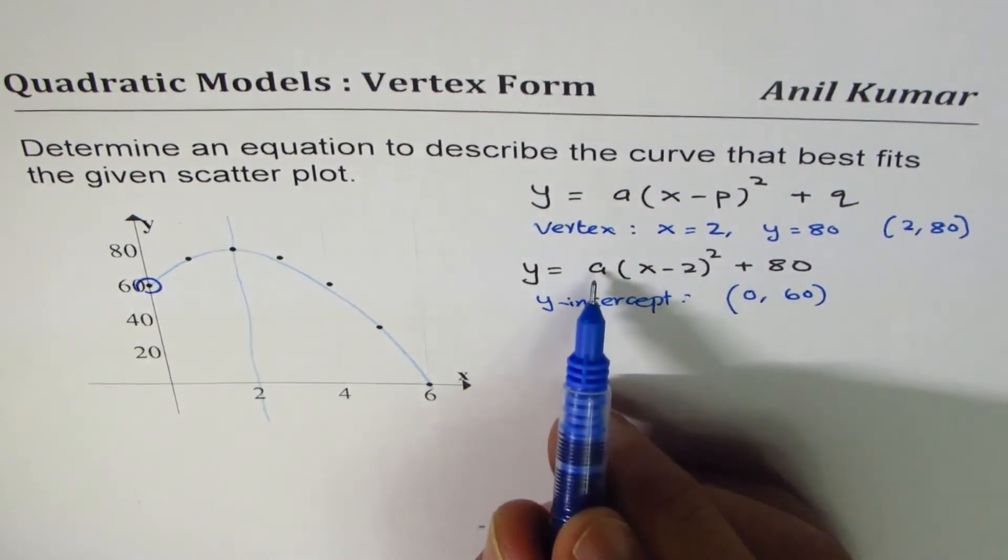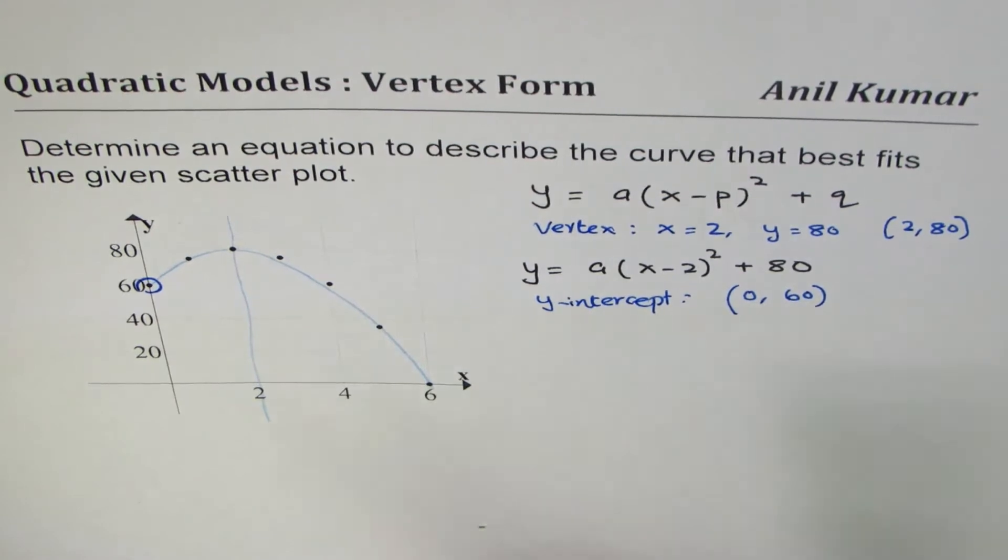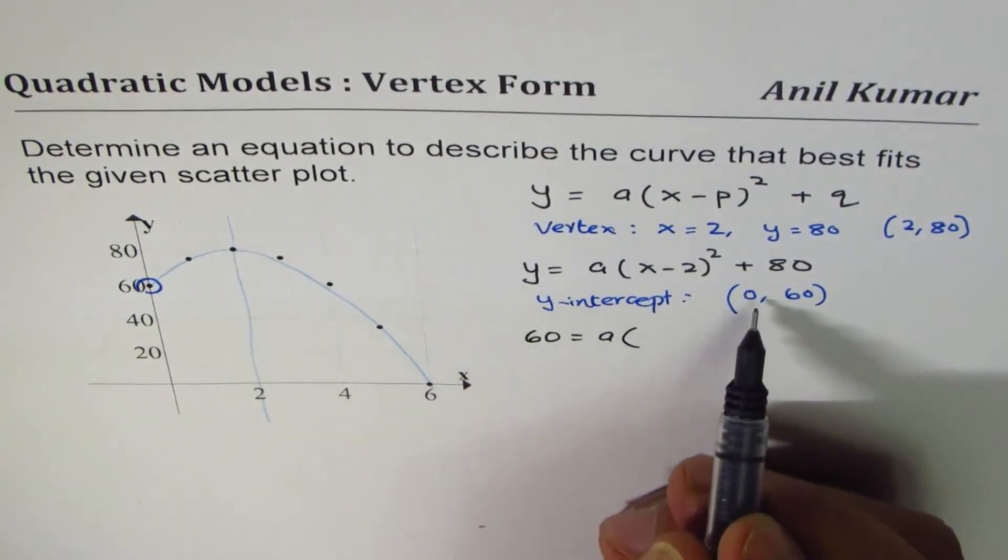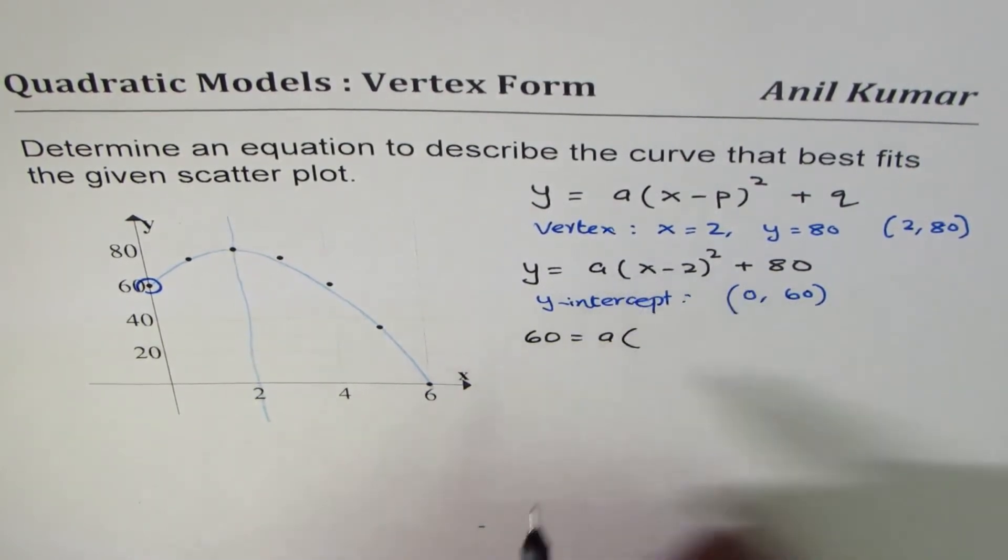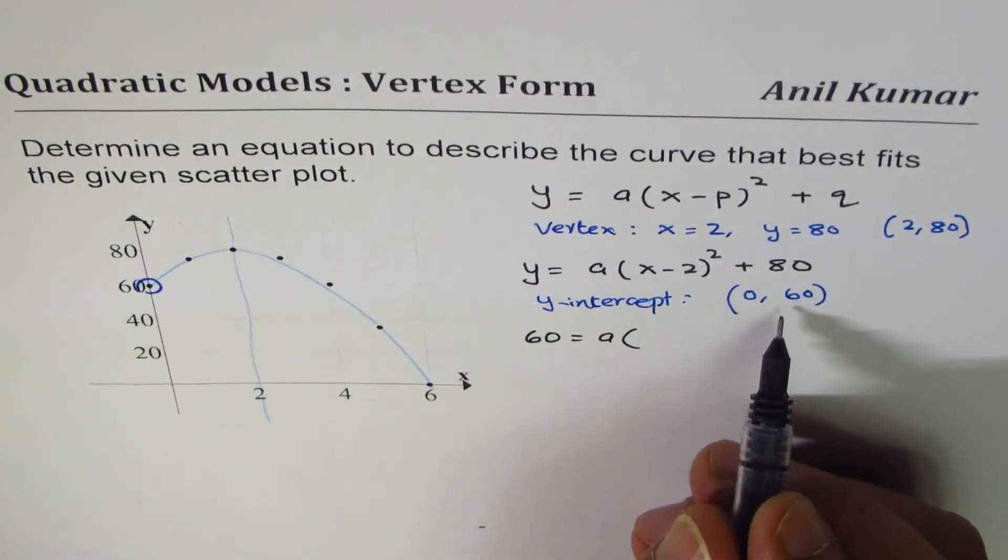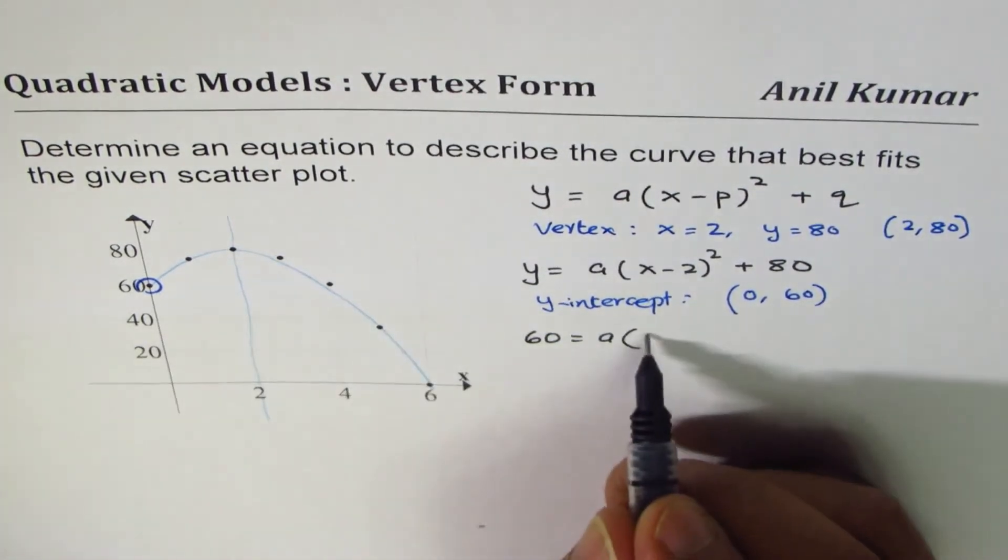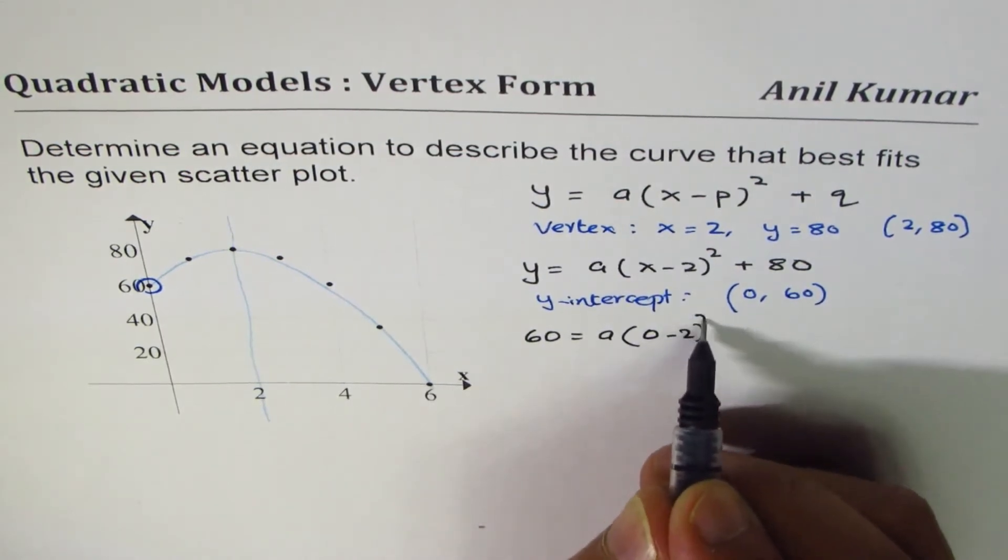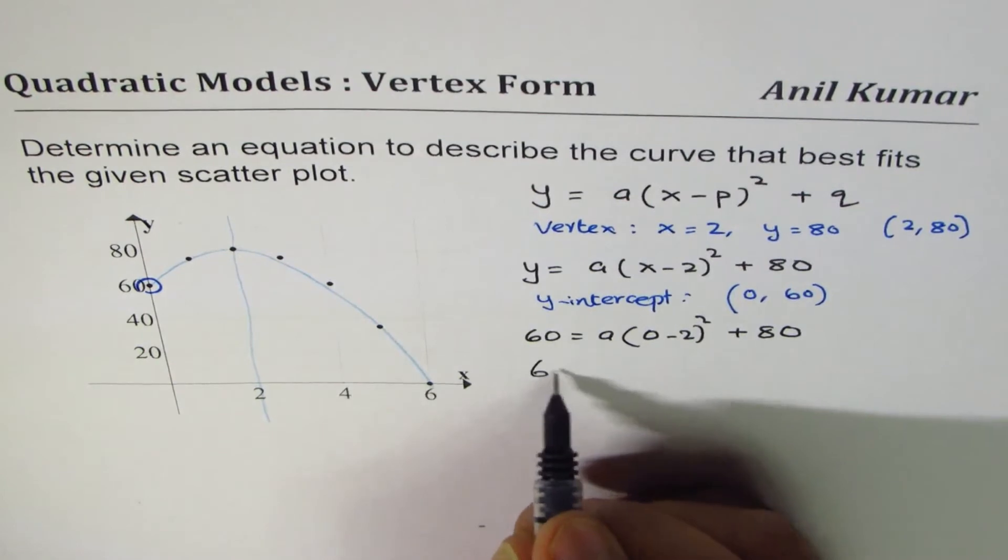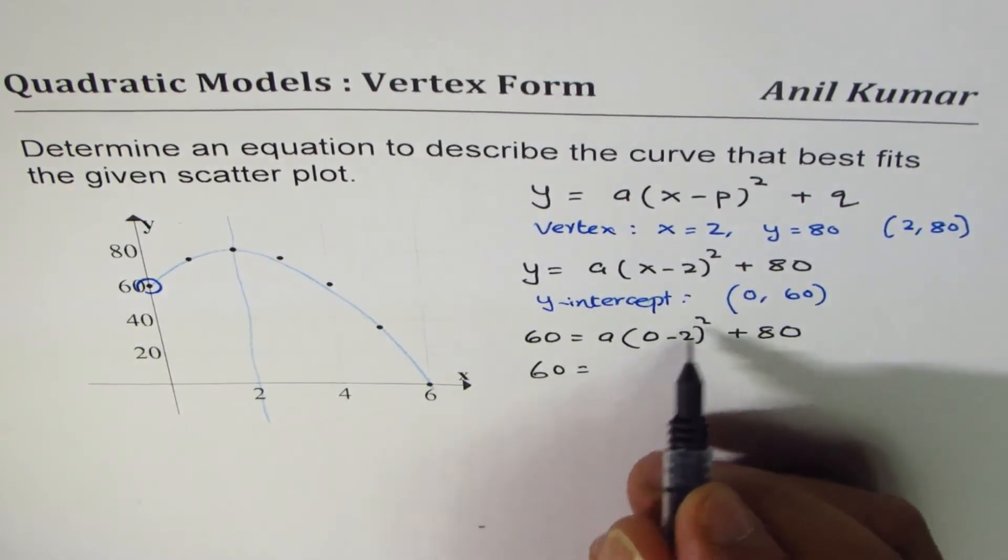So if I substitute this value, we can actually calculate the equation of this parabola. So y is 60. We will write this as 60 equals to a times - we are substituting this value here in this equation - a times x is 0, so 0 minus 2 whole square plus 80. So that gives us 60 equals to 2 square is 4.